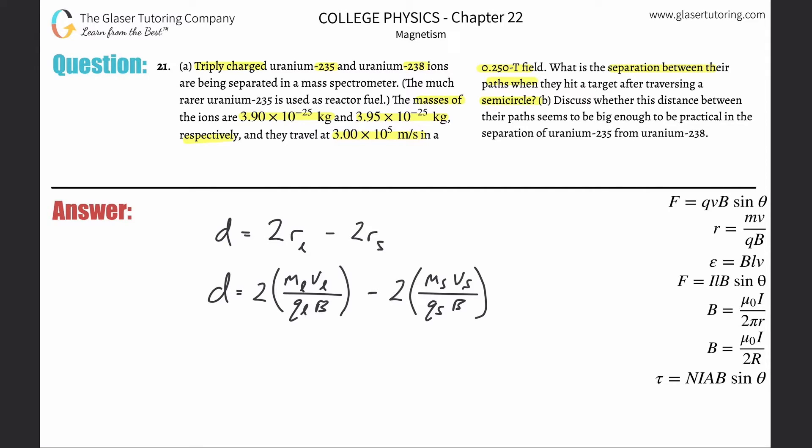Now if we notice, I'm going to highlight some things that are staying constant here. The velocity is staying constant, that is not changing for either of them. The charges are staying constant because they said they're both triply charged, and the magnetic field is also staying constant. And if you notice, these both terms have a factor of two in common.